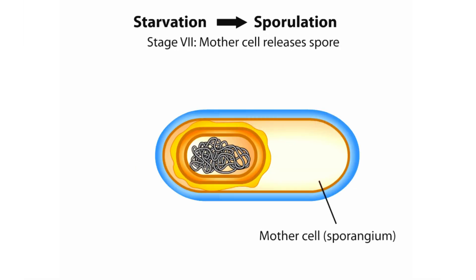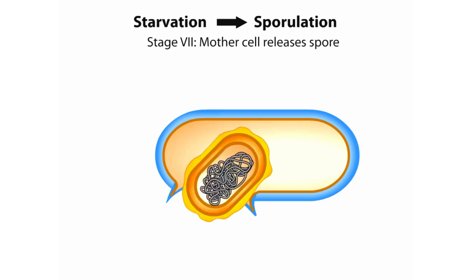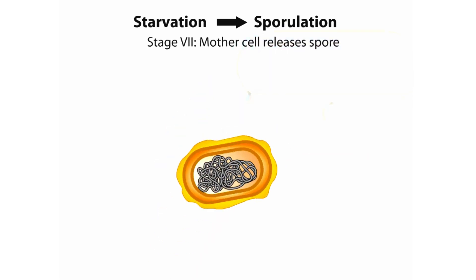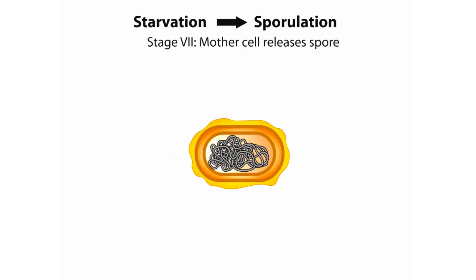In Stage 7, the mother cell — now called the sporangium — releases the mature spore.